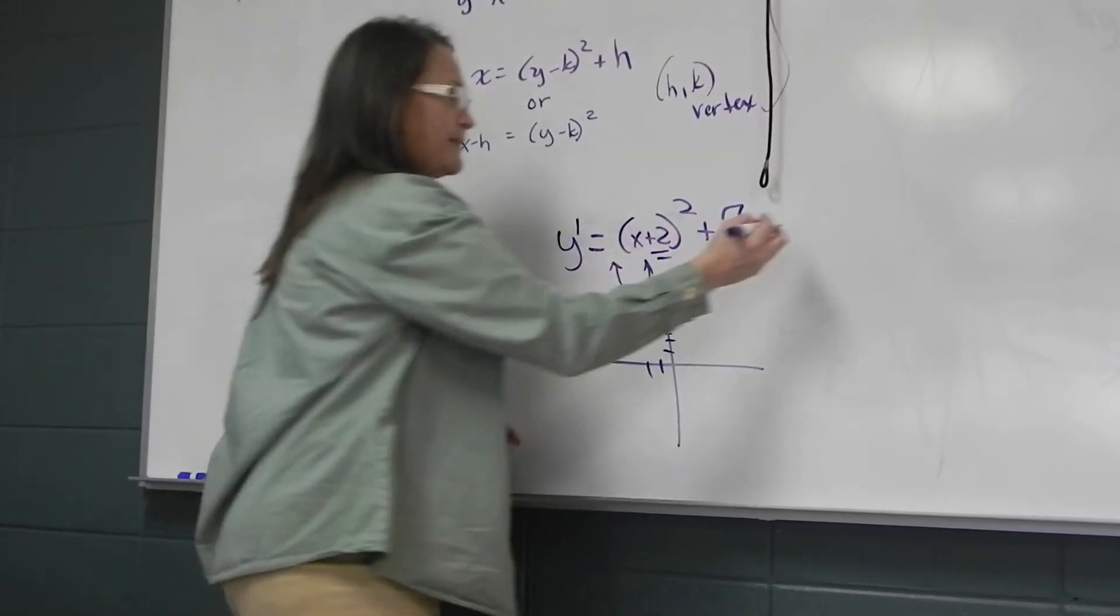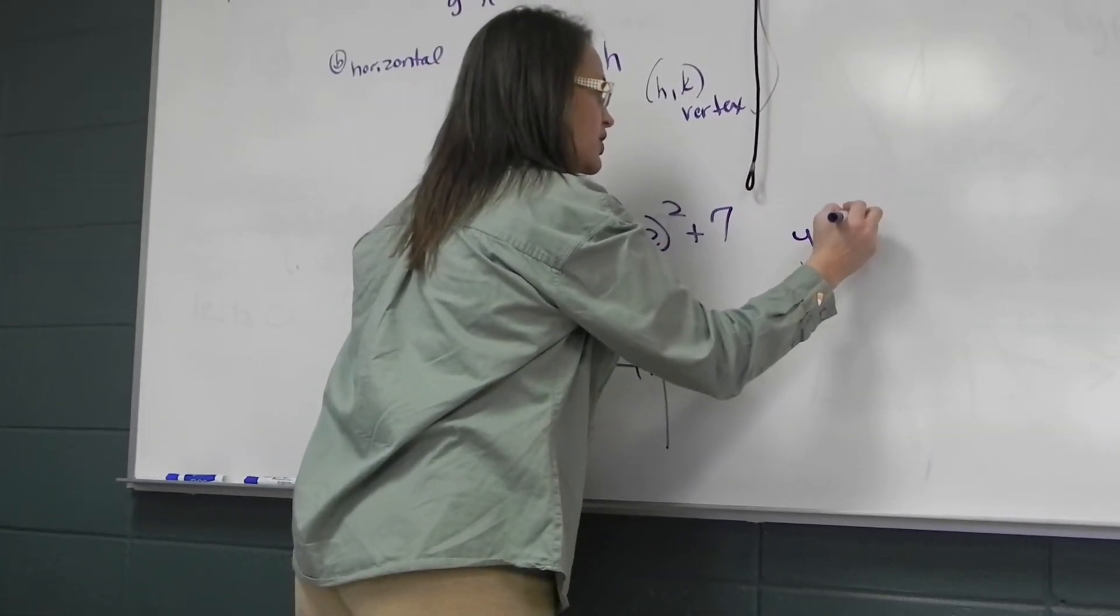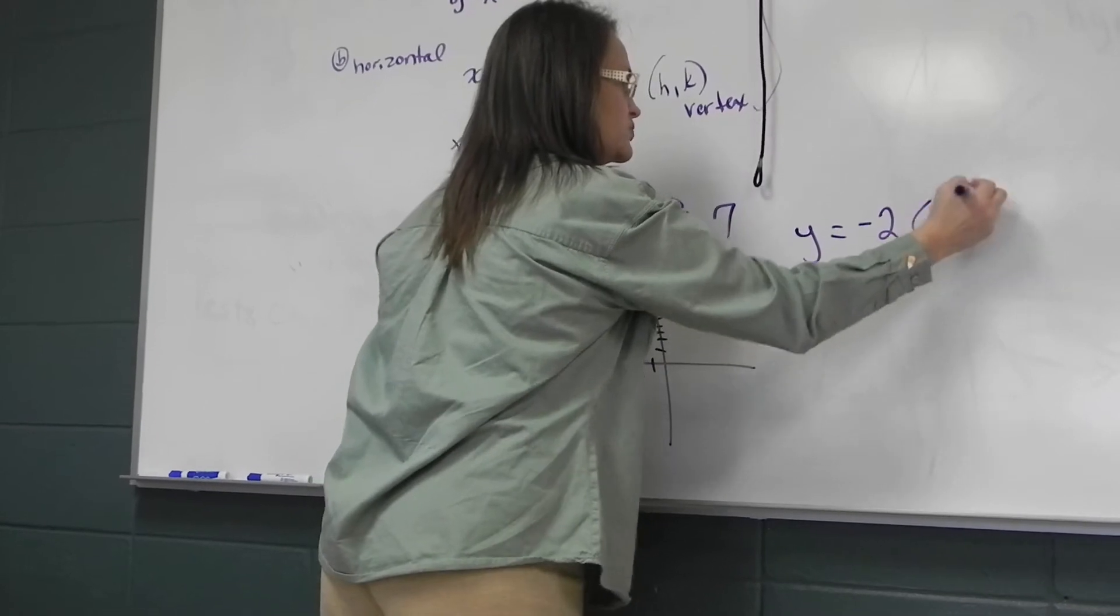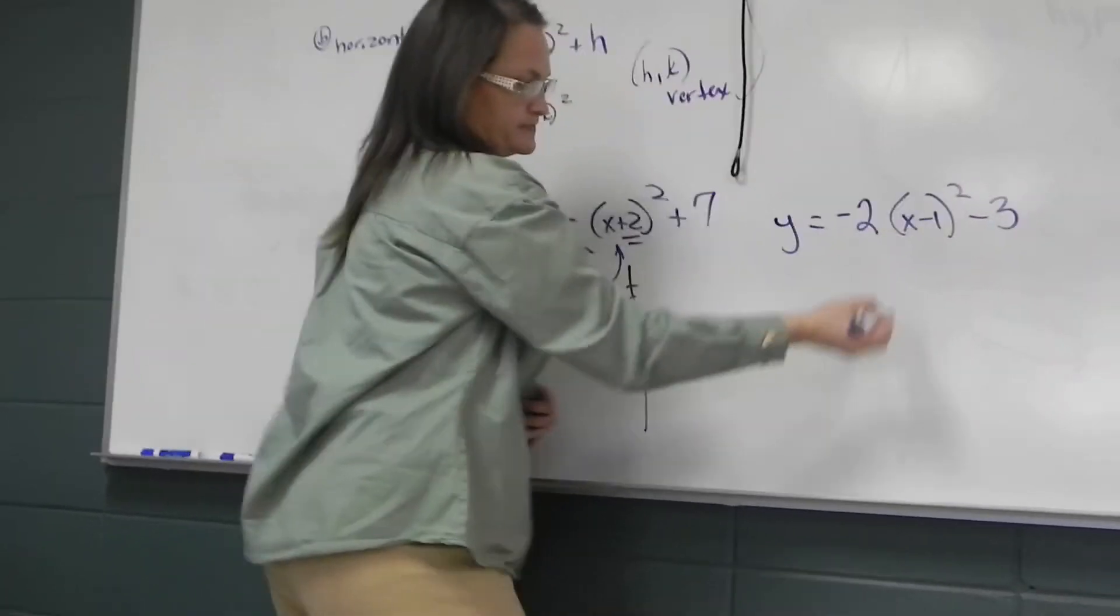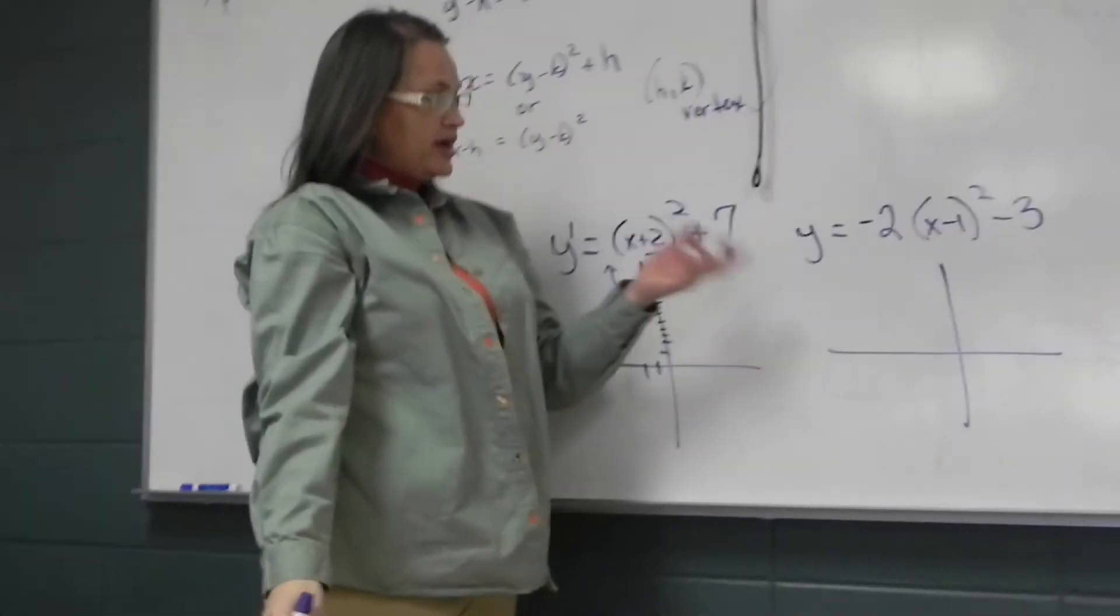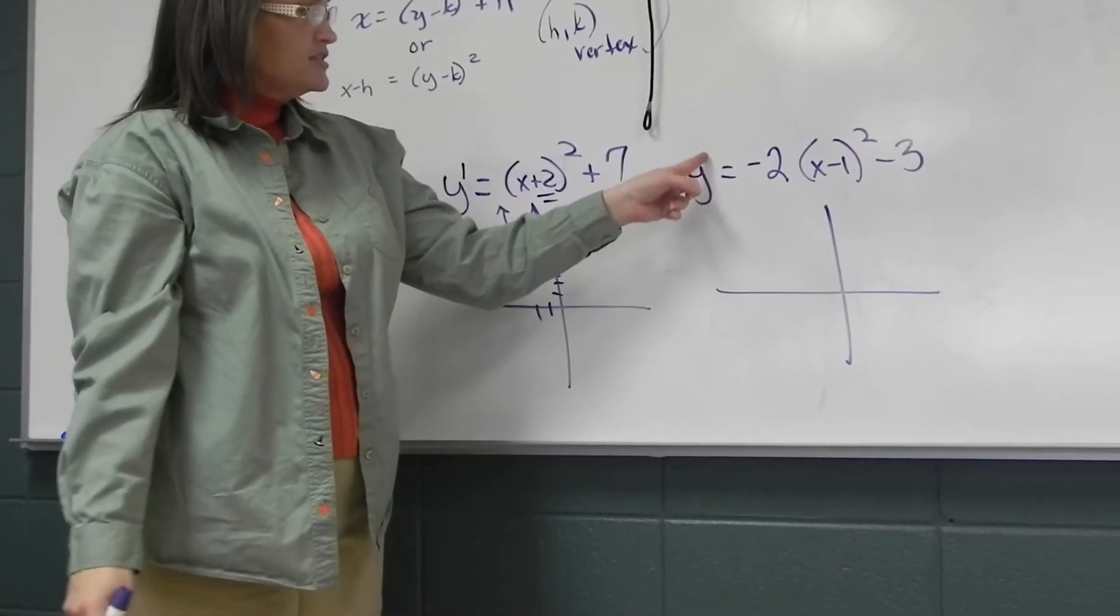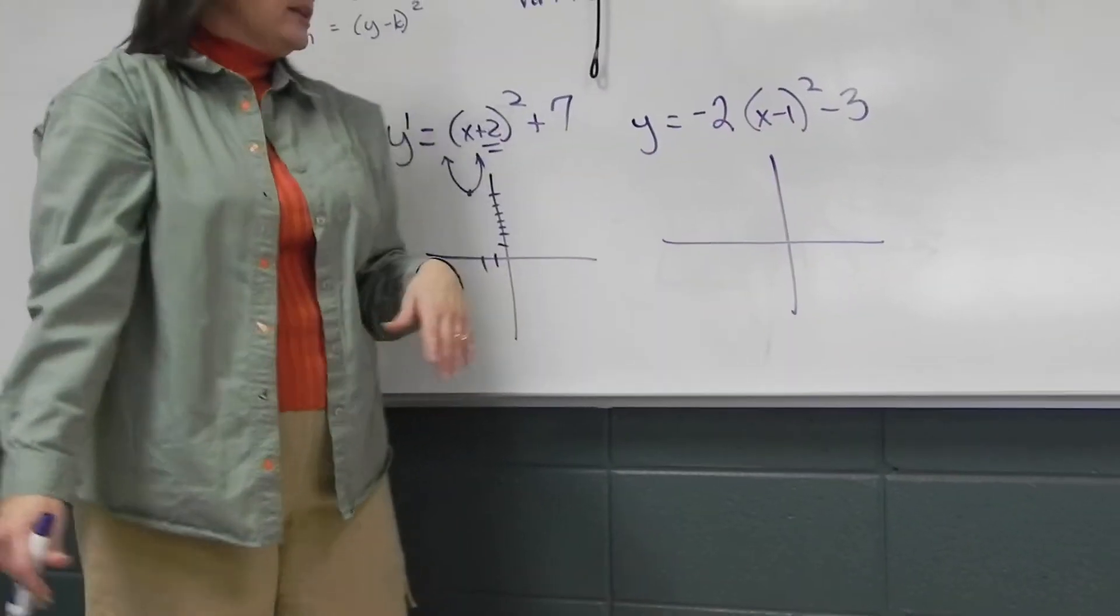Now, one more time. Let's do Y equals, let's put a coefficient, maybe negative 2, X minus 1 squared minus 3. I recognize it's a parabola because Y is to the first, X would be squared if it's expanded.